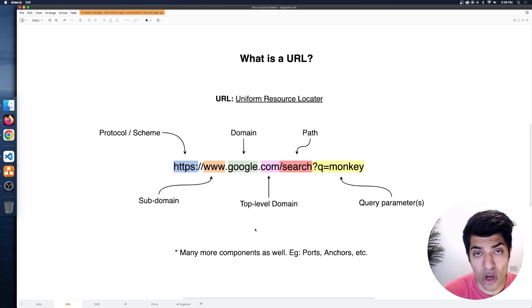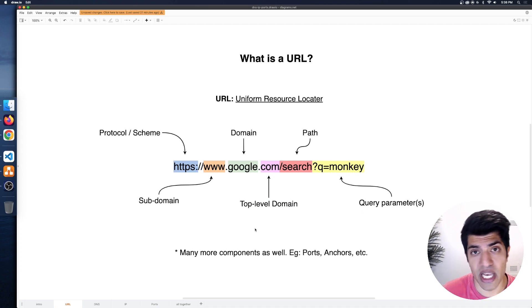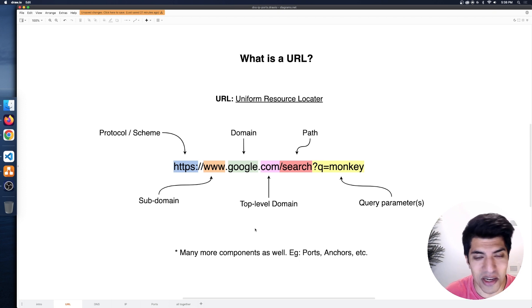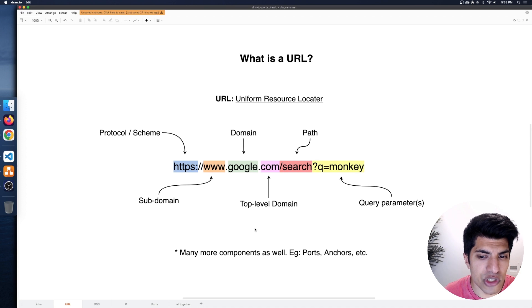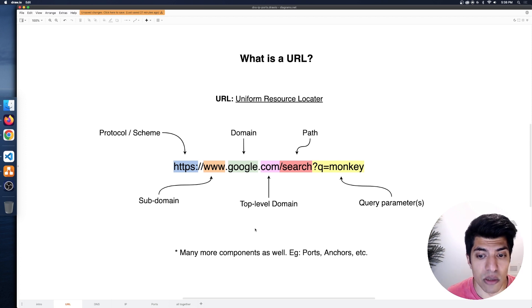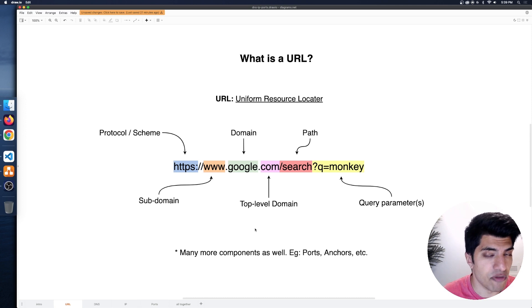Then there's the top-level domain — things like .com, which is usually for American companies; in Canada we have .ca. There are fancy ones like .ai and .io — most are for countries, some are newer ones like .dev that Google recently introduced. There's a limited subset of what these TLDs are. You've probably seen .org or .mil as well.